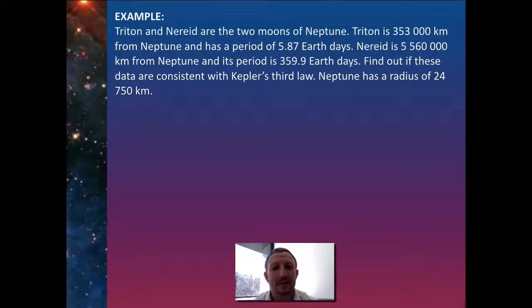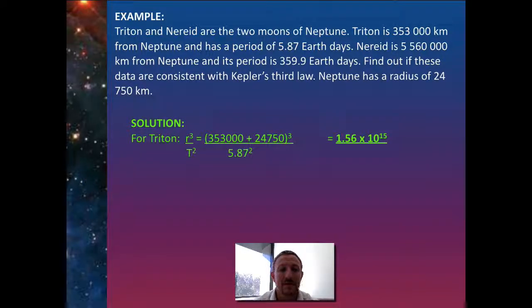Let's look at a quick example with Triton and Nereid, the two moons of Neptune. Triton is 353,000 kilometers from Neptune with a period of 5.87 Earth days. Nereid is 5,560,000 kilometers from Neptune with a period of 359.9 Earth days. We're going to find out if these are consistent with Kepler's third law. Neptune has a radius of 24,750 kilometers.